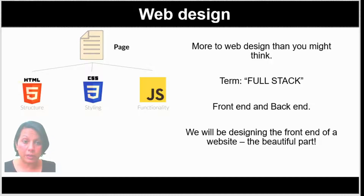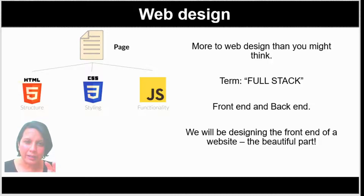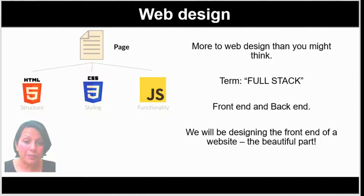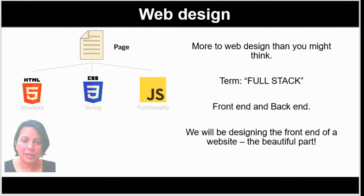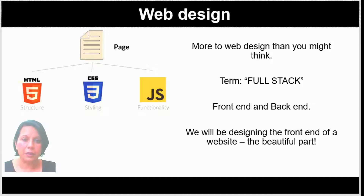Any website has a front-end — that's what you see — and a back-end, which involves the database and connectivity, things like login and sign-up. But we're going to be looking at the front-end, the beautiful bits, the visual bits, and that involves HTML, CSS, and JavaScript. Every website in the world that is interactive and dynamic will use HTML, CSS, and JavaScript. HTML is for structure, CSS is for styling, and JavaScript is for interactivity and functionality.